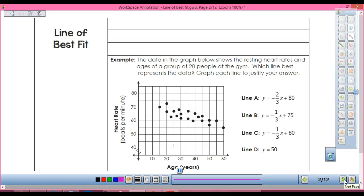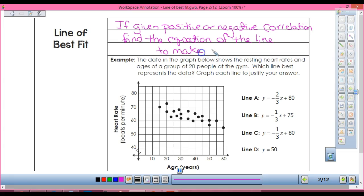Alright, so then, line of best fit. Line of best fit is if you have a positive or negative correlation. So if you don't have a correlation, you can't do a line of best fit. Only if you have a positive or negative correlation. You can find the equation of the line to make predictions.